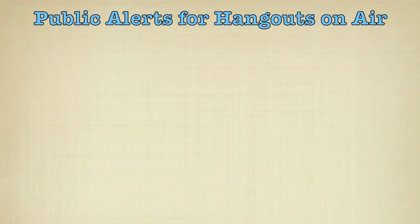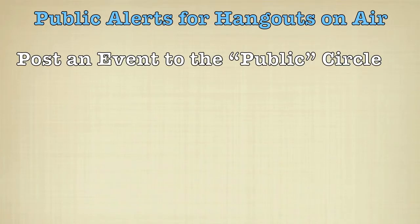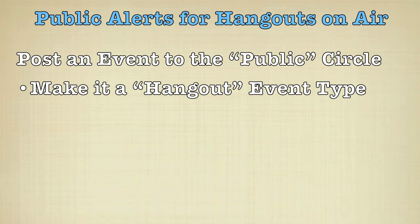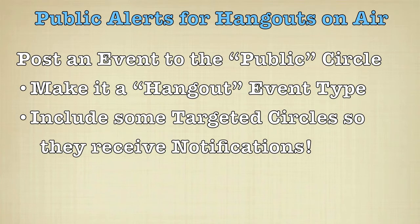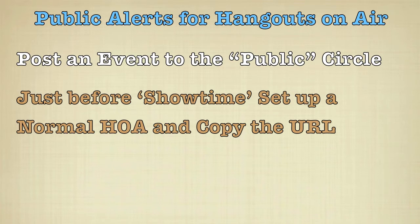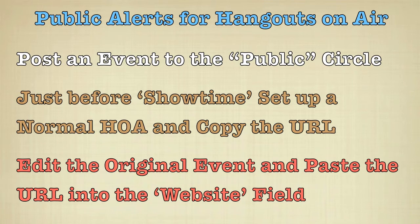The process has three main steps — these are clickable if you're watching on YouTube. Step 1: Post an event to the public circle. To help people understand what it is, make sure it's a Hangout type event. You'll also want to include some targeted circles in your address area so that they can receive notifications. Step 2: Just before show time, like maybe 15 minutes ahead — green room time — set up a normal Hangout On Air and copy the YouTube URL you're given to share. Step 3: Go back and edit the original event and paste in that URL into the website field, ahead of time, so that when the event starts, people will be sent an alert that includes the proper URL to click on to go watch the Hangout.